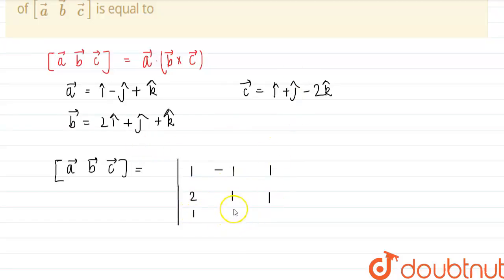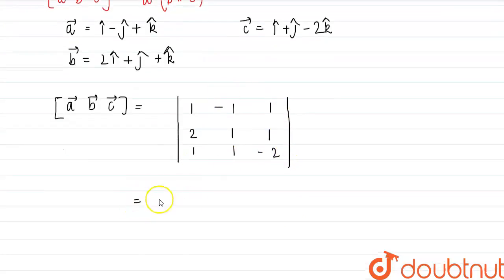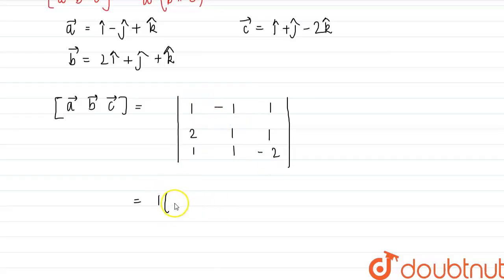So we can now just find the value of this determinant. So this is 1 into (minus 2 minus 1), this is plus 1 into (minus 4 minus 1)